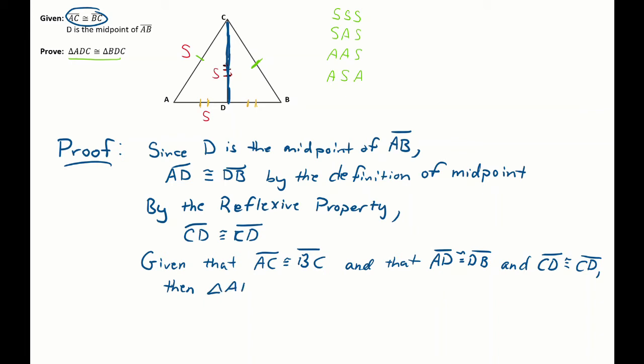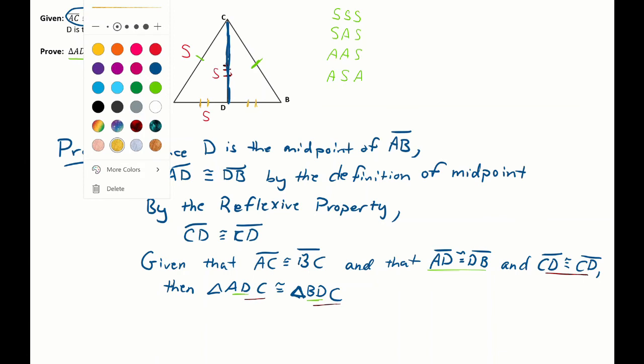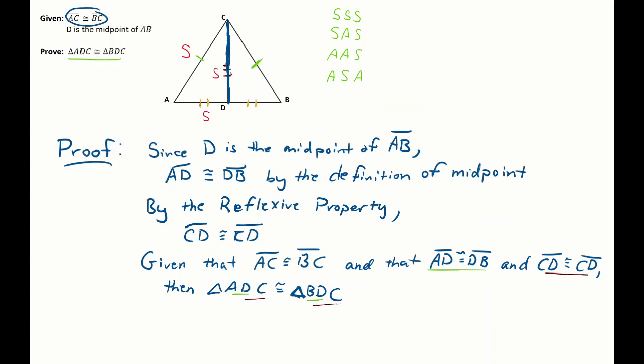Triangle ADC is congruent to triangle BDC. Okay, and the order of that congruency statement is important, so let's just do a quick check. It's saying AD should be congruent to BD, and that's what I have over here. AD congruent to BD. It is saying that DC should be congruent to DC, or that could be read as CD. And it's saying that CA is congruent to CB, which is what I have there. So I did match up the right sides with the right sides.